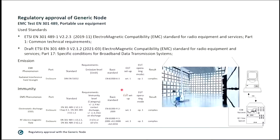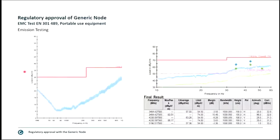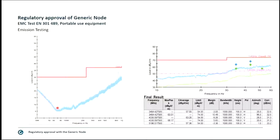Looking at the emission test results for the Generic Node: testing starts at 30 MHz and goes up to 1 GHz. You can see the limit line starting at 30 dBµV/m, with a bandwidth limit increase up to 37 dBµV/m, which is according to Class B. The amplitude values shown are real values measured at Citicom's premises with the Generic Node, and you can see the device complies — everything is below the limit up to 1 GHz.